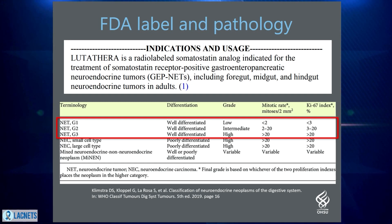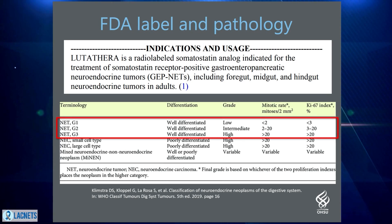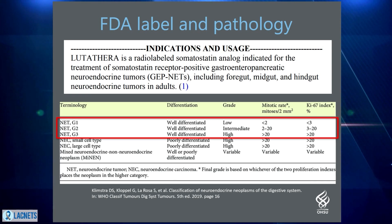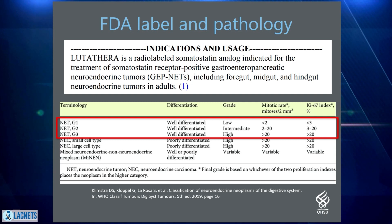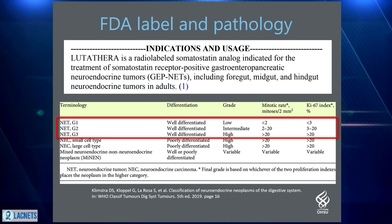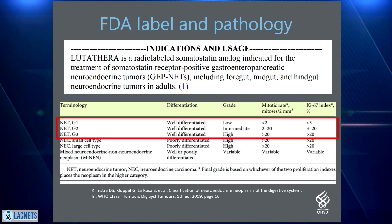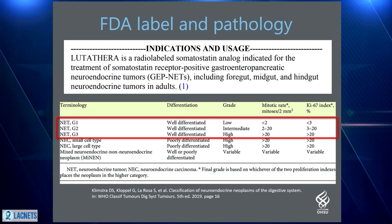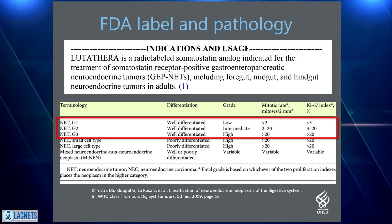The low, intermediate, or high grade is differentiated primarily by the mitotic index or the Ki67 index, which is a proliferation marker. Anything less than 3% is low-grade, 3 to 20% is intermediate, and above 20% is considered high-grade. The key thing to focus on is that this treatment is only for those that are well-differentiated, and not for those that are poorly differentiated, which are considered neuroendocrine carcinomas.